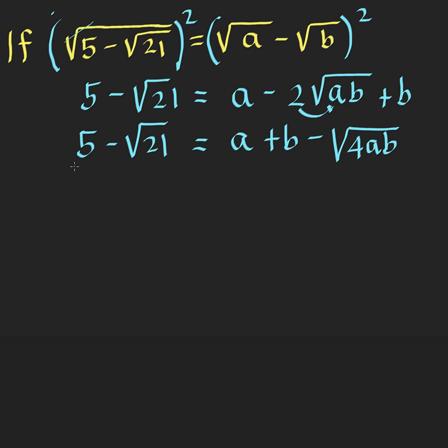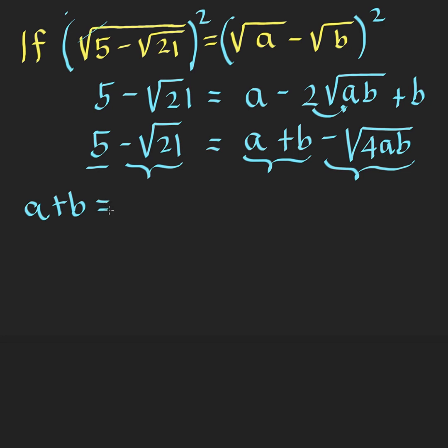Then we copy 5 minus square root of 21. Now, notice that this 5 would be this A plus B, and this minus square root of 21 would be this minus square root of 4AB. So we now say that this A plus B is now equal to 5, and this negative square root of 4AB is this negative square root of 21.